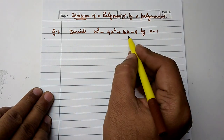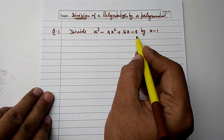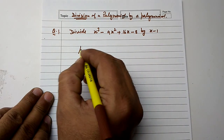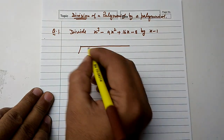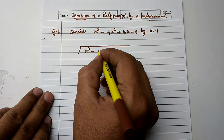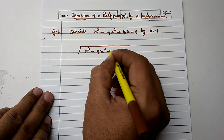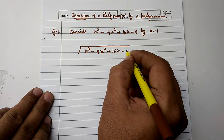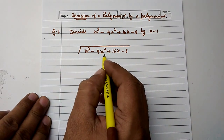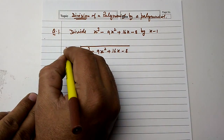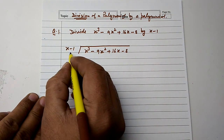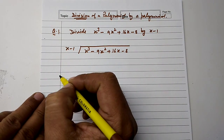Divide x cubed minus 9x squared plus 16x minus 8 by x minus 1. We set up x cubed minus 9x squared plus 16x minus 8 divided by x minus 1.